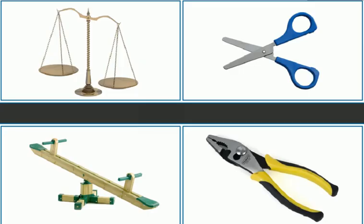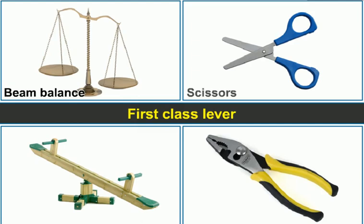Look at the picture. The examples of first-class lever are beam balance, scissors, seesaw, pliers and so on. All of these have fulcrum in between the load and effort.